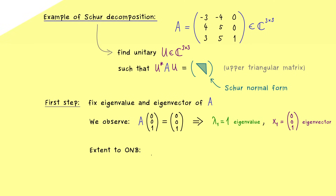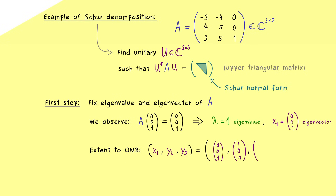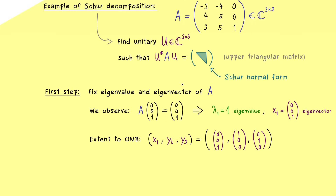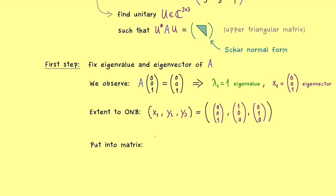In the next step we extend x1 to an ONB of ℂ³, choosing suitable vectors y2 and y3 that are mutually orthogonal and normalized. The canonical unit vectors are the easiest choice: y2 = (1,0,0) and y3 = (0,1,0). This gives a well-defined ONB, which we put into the columns of our first unitary matrix U1. The inverse is the adjoint, computed by transposing and complex conjugation.